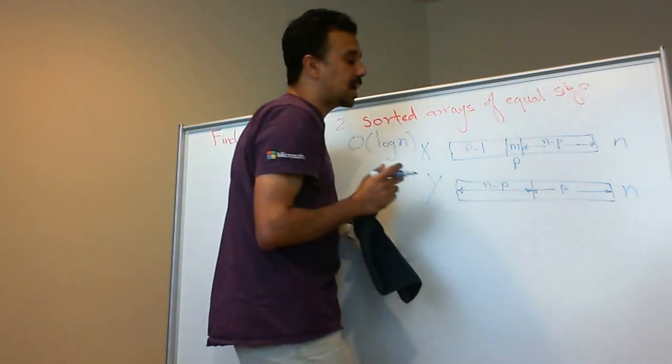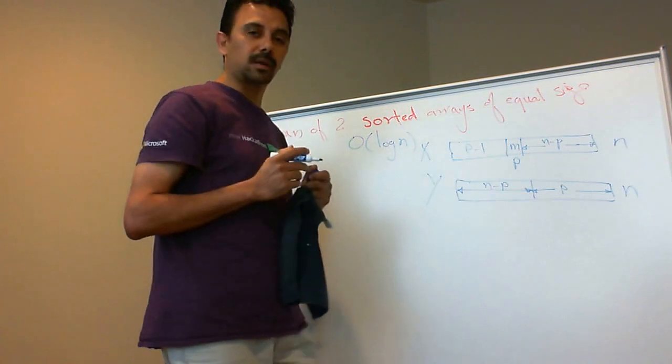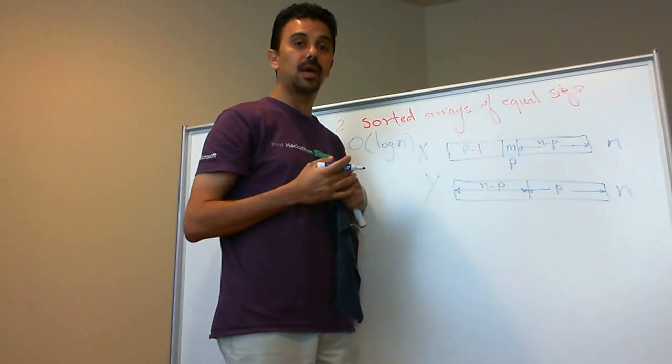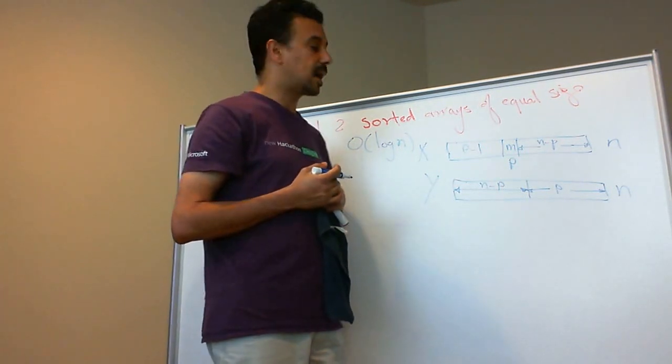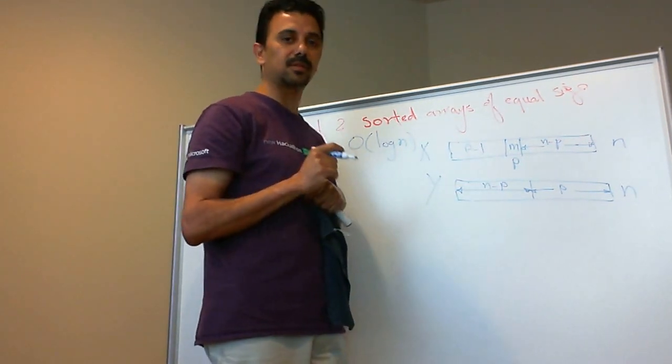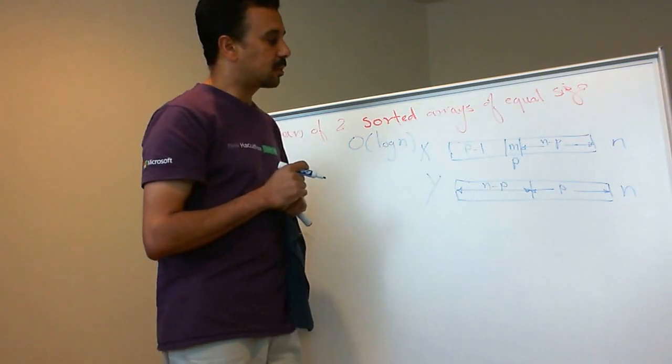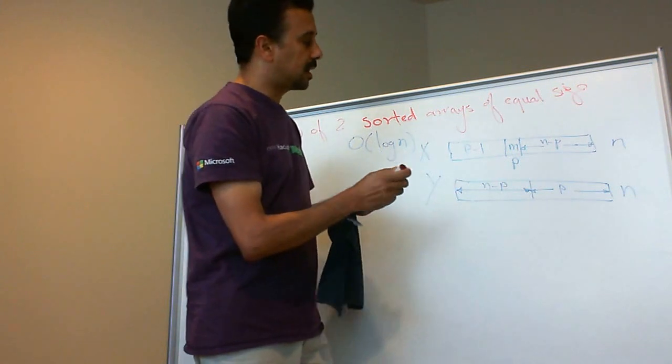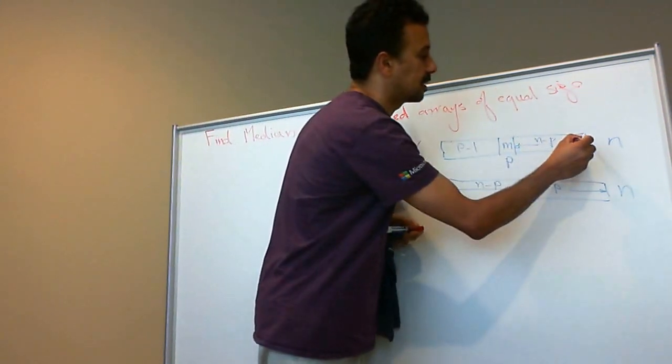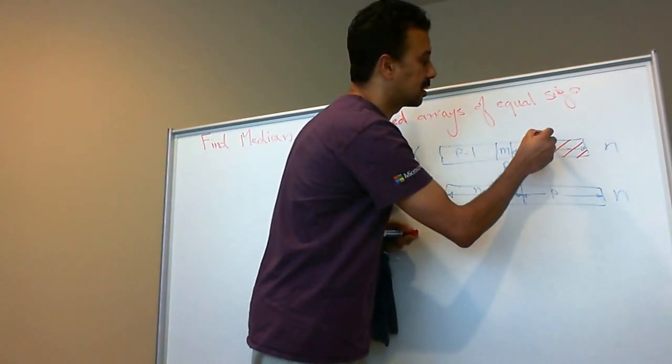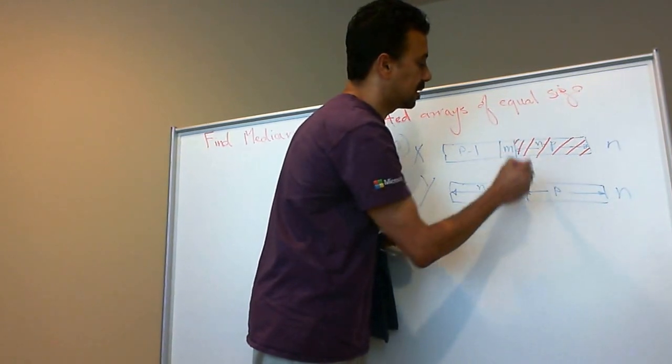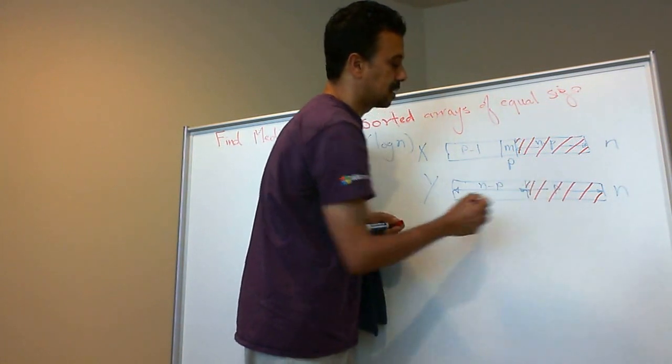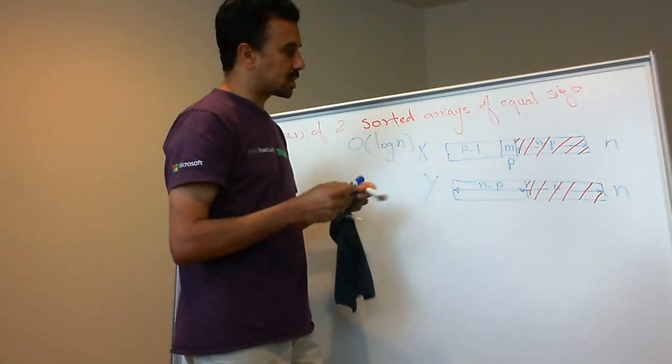Now, there's a property that we can derive from this, a property that has to be true through our algorithm, and we're going to exploit that. We're going to depend on that in our algorithm.